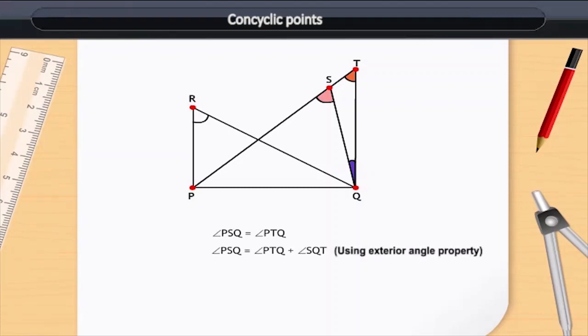Using the exterior angle property of the triangle STQ, we can say that angle PSQ is equal to the sum of angle PTQ and angle STQ.